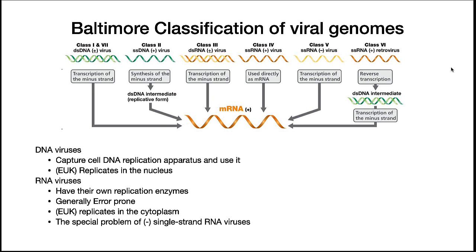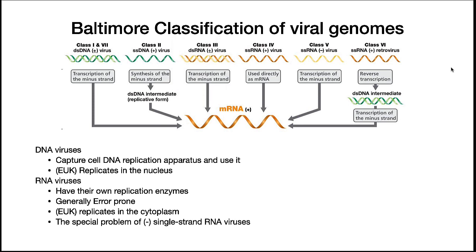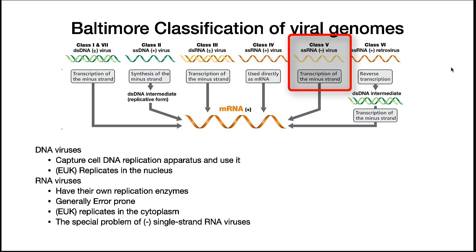For RNA viruses, no normal cell will make RNA from an RNA template. Therefore, the virion must supply the RNA polymerases. These replicases are typically more error-prone than DNA polymerases. Class 3 viruses are double-stranded RNA — viral enzymes transcribe the negative RNA strand to make the positive strand messenger RNA copy. Class 4 viruses are positive RNA and can be directly translated by the ribosome because they mimic a messenger RNA. Class 5 viruses are negative single-stranded RNA and have a unique problem: they cannot be translated by the ribosome and there is no host enzyme that will copy them to make a positive strand. Thus, they have to bring along their own replicase enzyme when they infect the cell.